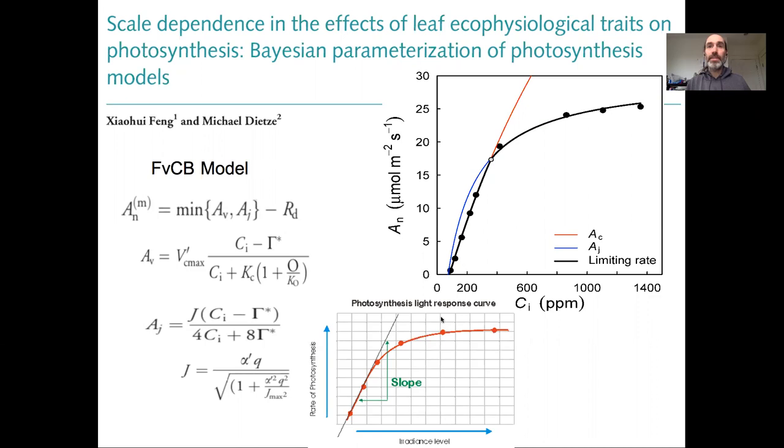The data for fitting these models is often generated by running what's called a response curve, where you might hold everything constant except light and then vary the light level and see how the photosynthetic response changes, and then you might run a CO2 response curve where you hold everything constant, set light at a high saturating level and vary CO2 concentration and see how that causes photosynthesis to vary.